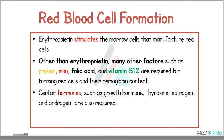The erythropoietin hormone stimulates the bone marrow cells that manufacture red blood cells. Other than erythropoietin, there are many factors such as protein, iron, folic acid, and vitamin B12 which are required for the formation of the red blood cells and their hemoglobin content. Certain hormones, for example growth hormone, thyroxin, estrogen, and androgen, are also required in red blood cell formation.